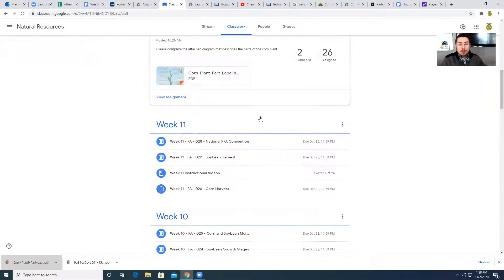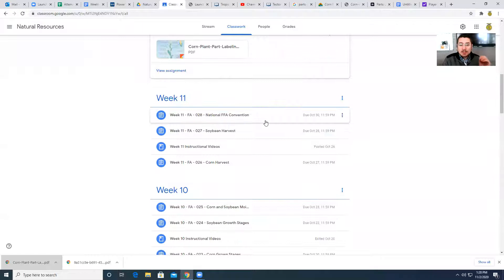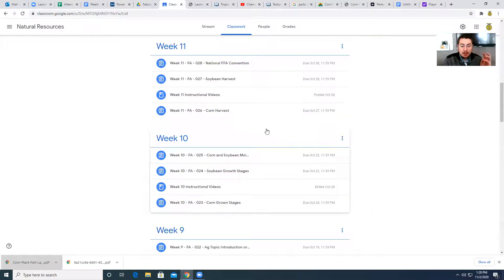So on Thursday, we are going to have a summative based on the anatomy of corn and soybean plants. So if you're planning to review, go back and start at assignment number 21, root systems and identification.